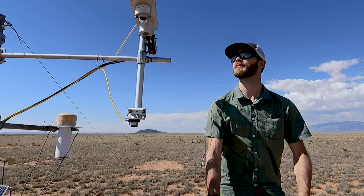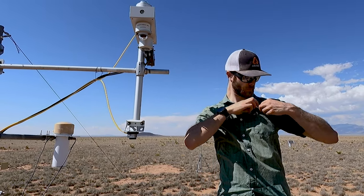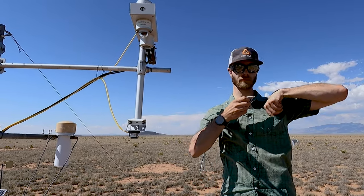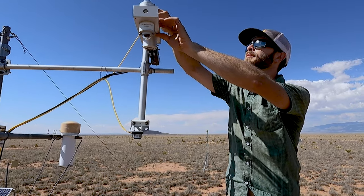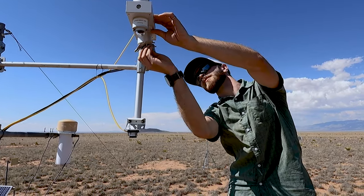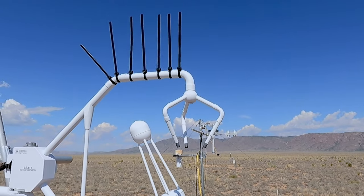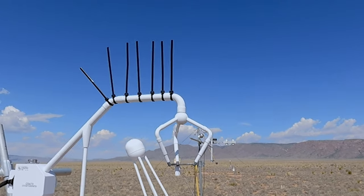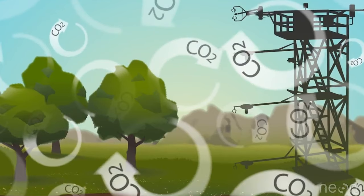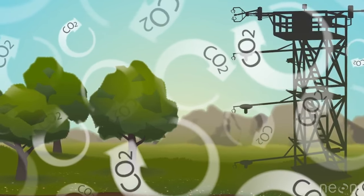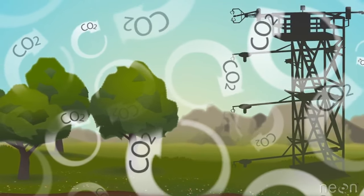To answer these questions, we mount instruments above the plant canopy and simultaneously measure CO2 and water vapor concentrations using an infrared gas analyzer, and also three-dimensional wind speed and direction using a sonic anemometer. We then use a method called eddy covariance to calculate the net movement of CO2 and water vapor between the atmosphere and the land surface.